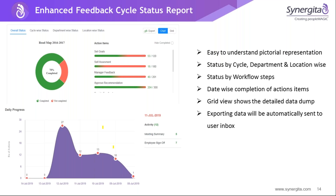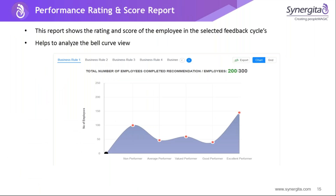This report can also be fetched in a grid view, and the data will be provided in detailed form. The same can be exported by the HR admin and once exporting is done, the data will be automatically sent to the respective user's inbox. Next is the performance rating and score report. In this report, the chart view has been improved to provide detailed information on how many employees got a particular rating distribution. This report mainly helps HR to analyze the bell curve view among employees in a particular feedback cycle.